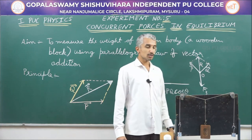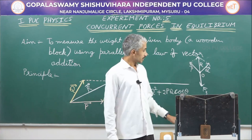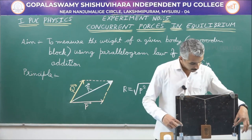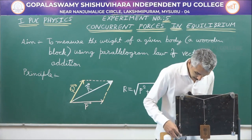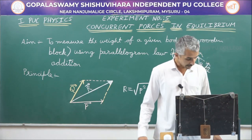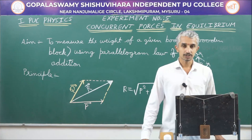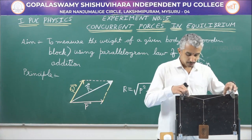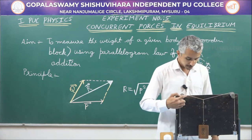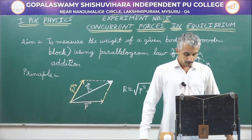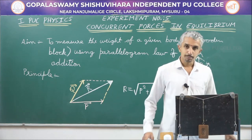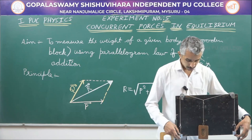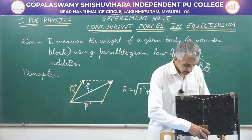Using this principle, we will be finding the unknown weight of the given object — a wooden block. Here I have a wooden block and two known weights: 150 grams on the right and 150 grams on the left. These masses pull the threads in two different directions, constituting forces P and Q, which are balanced by the wooden block. If I can find the resultant of these two forces, I can also find the weight of the wooden block.